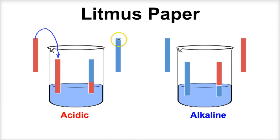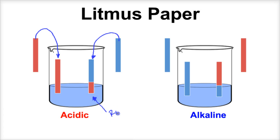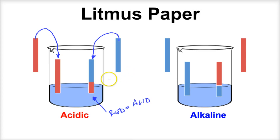But if you take a piece of blue litmus paper and put it into the acidic solution, then the tip of the litmus paper will turn red. This color change tells us that the solution is an acid. Litmus paper is one easy way of determining whether a solution is acidic or basic by a simple color change.